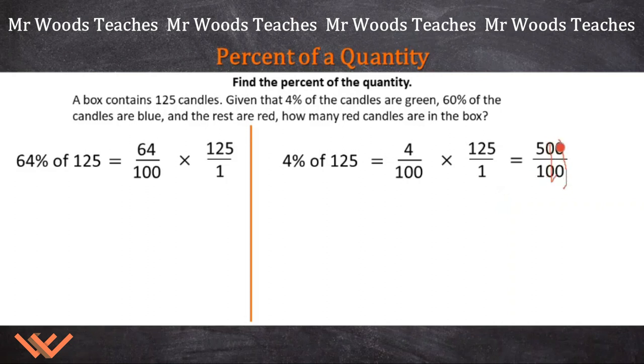Let's just take those zeros away. 5 over 1, that's going to equal to 5 green candles. So we know how many green candles there are.